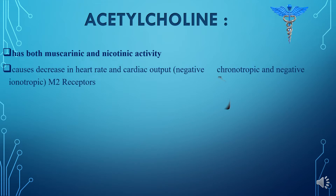When acetylcholine is given to a cardiac patient, it binds to the M2 receptors and decreases the heart rate and cardiac output, showing negative chronotropic and negative inotropic effects.